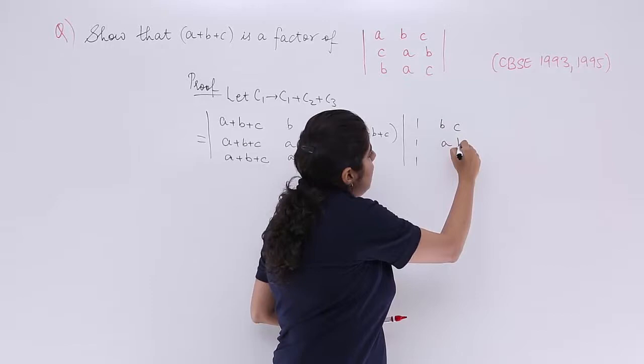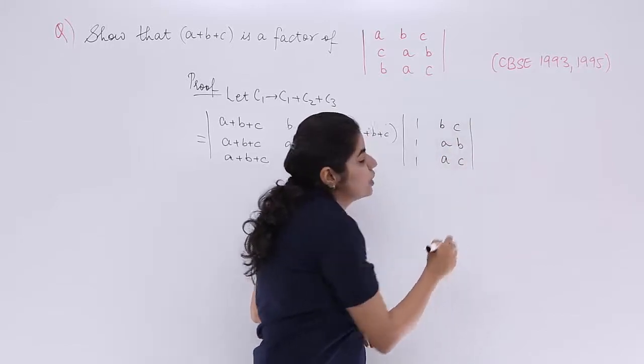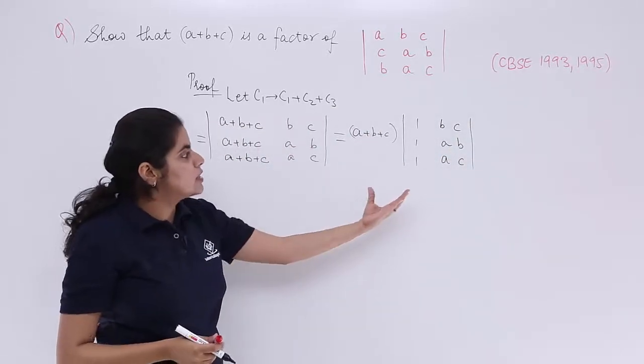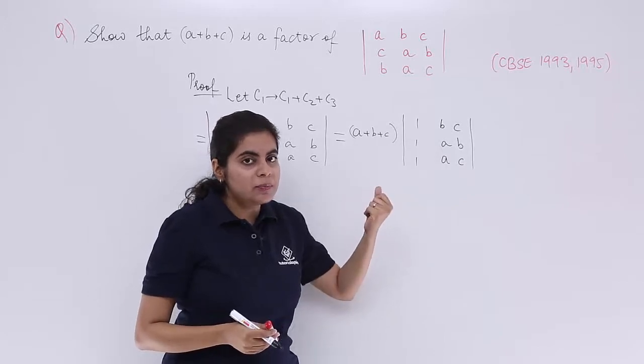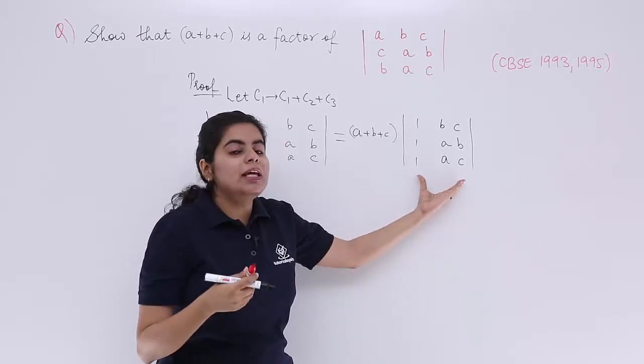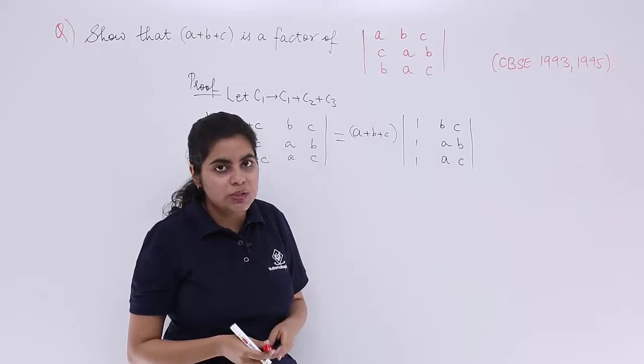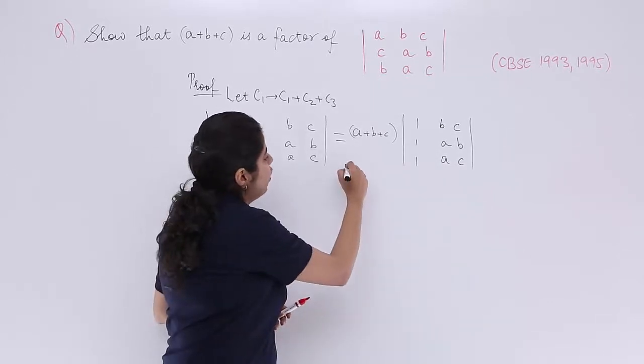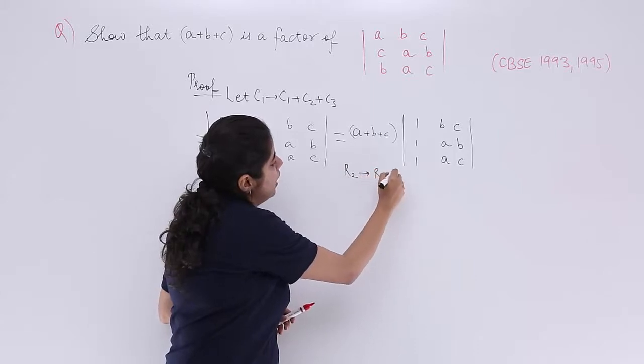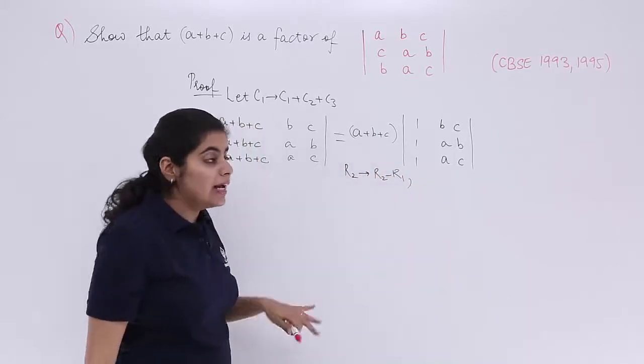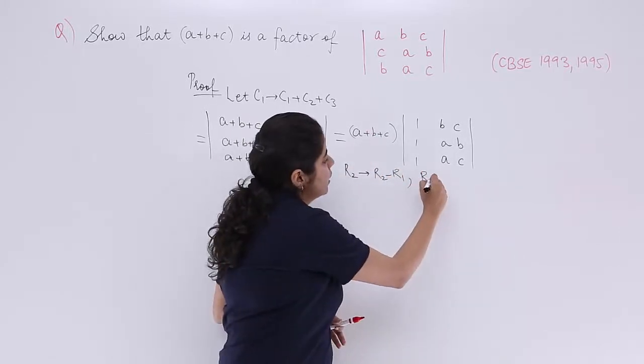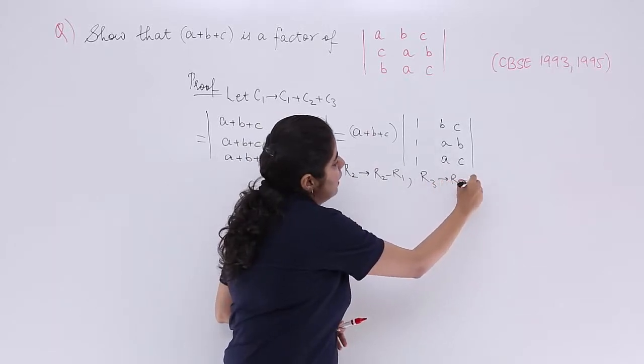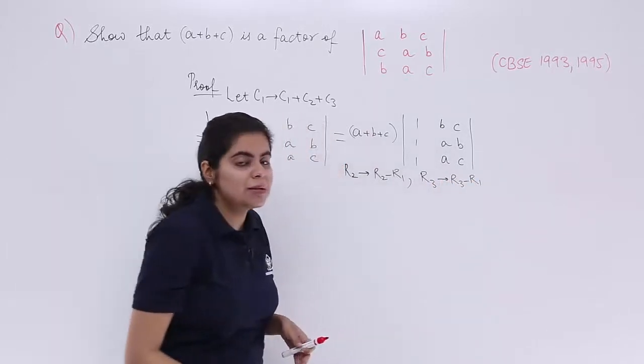So it is b, c, a, b, and a, c. No changes there. Now when you see that this determinant is there, the determinant can be evaluated easily when there are more number of zeros. So in order to make zeros, let's apply the operation r2 minus r1. And in r3 also, if we apply r3 minus r1, things become simpler.